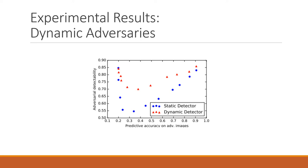Moving on to dynamic adversary results: the graph shows results for dynamic adversaries with epsilon equal to 1 against both a static detector and a dynamic detector. The static detector did not perform well and is not robust against dynamic adversaries for certain sigma values — detectability is close to chance level and predictive performance is reduced to less than 30% accuracy. The dynamic detector is much more robust, with detectability greater than 70% for all instances of sigma.